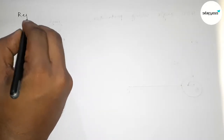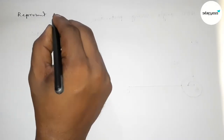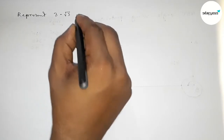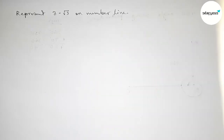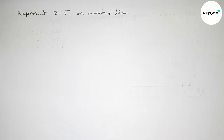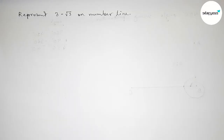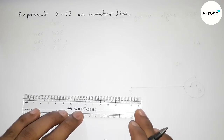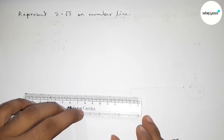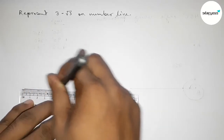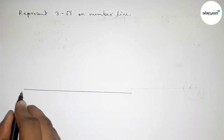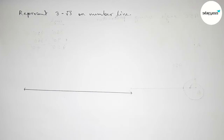Hi everyone, welcome to essay share classes. Today in this video we have to represent 3 minus root 3 on a number line in an easy way. So let's start the video. First of all we have to draw a number line, so now drawing a line of any length and taking arrow marks on both sides.